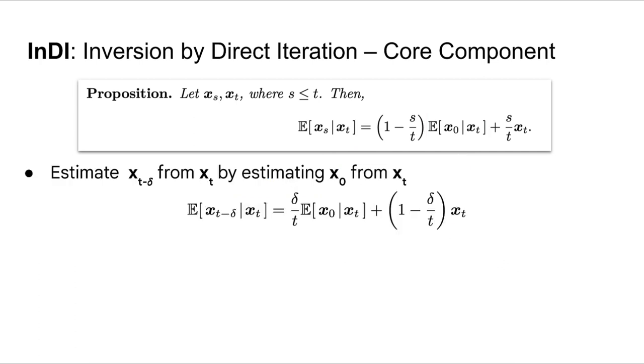This means that we can actually recover a slightly less degraded image, let's say, at time t minus delta, by estimating the clean image at time t, and then by doing this very specific convex combination with the current estimate. This proposition gives a way of propagating the MMSE estimate.